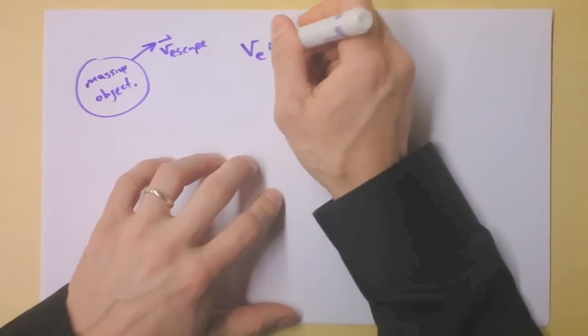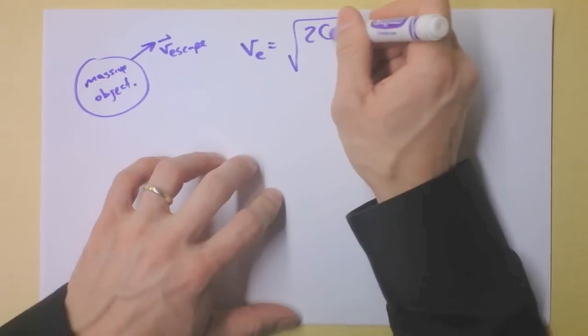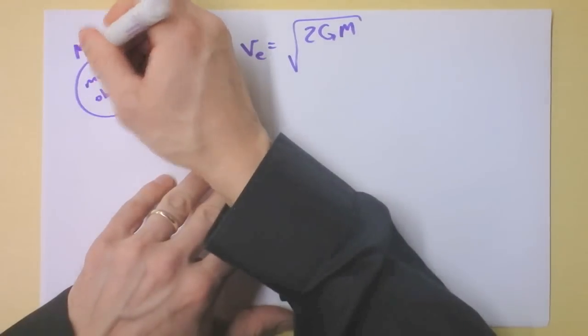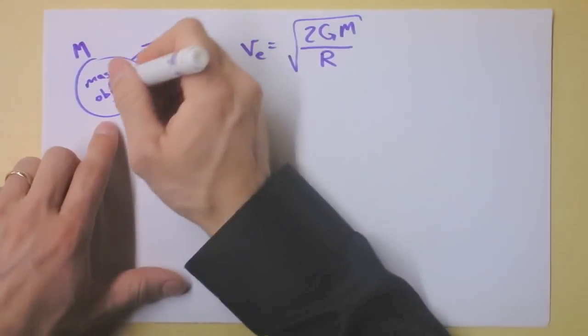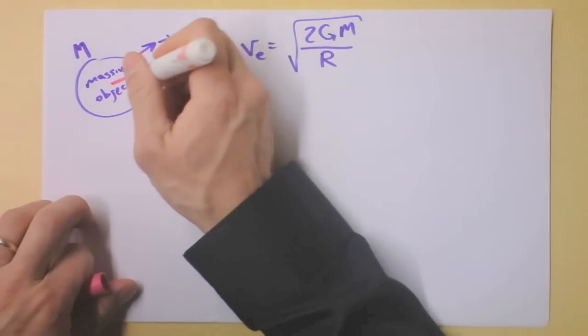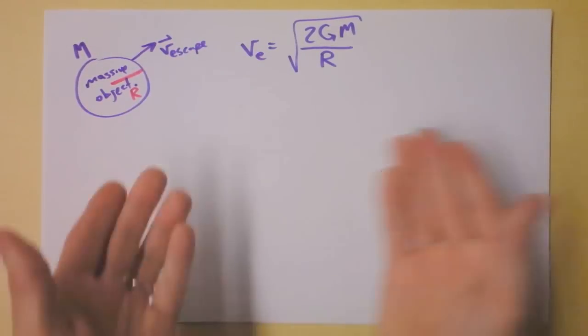That math is really easy but I'm just gonna write down the result right here. The escape velocity was the square root of 2 times the gravitational constant of the universe times the mass of the massive object, and then we had to divide it by the radius of the massive object. So I'll label that in pink so we don't mess up our massive object thing, that radius right there is R.